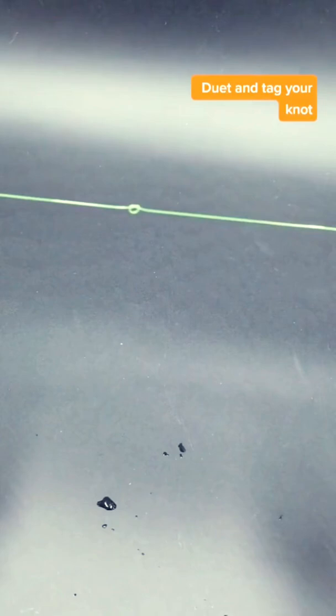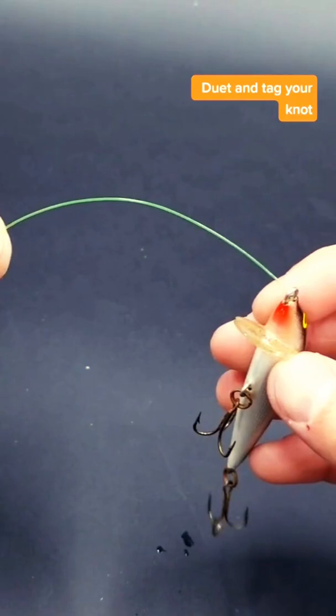Grab your lure, go through the lure, and go back through that overhand knot.